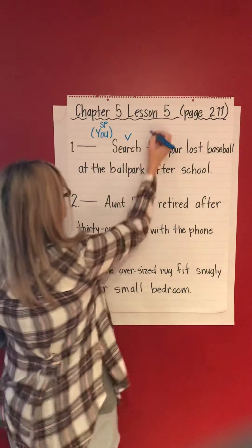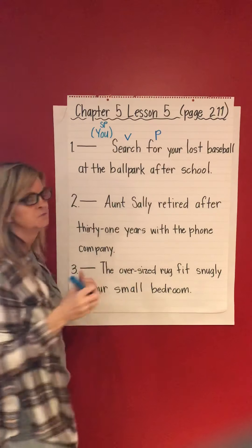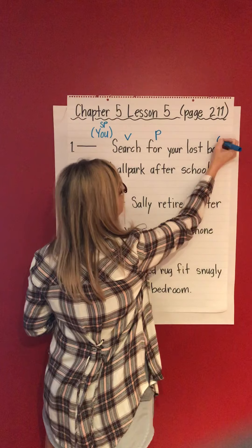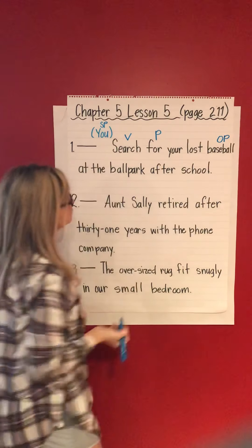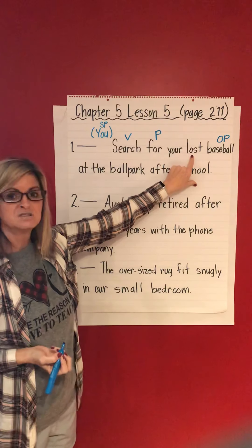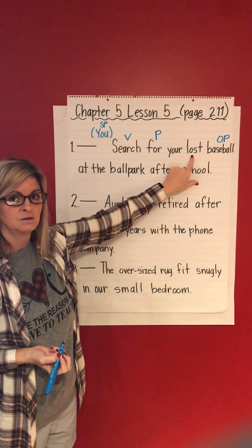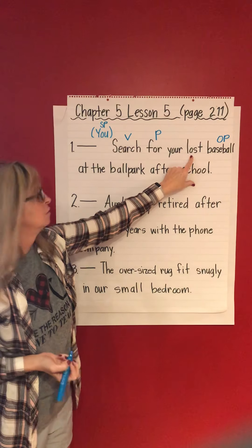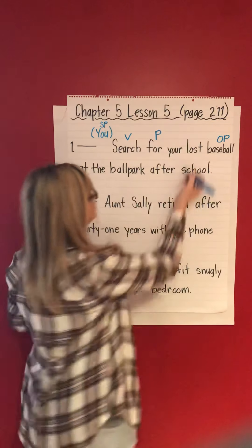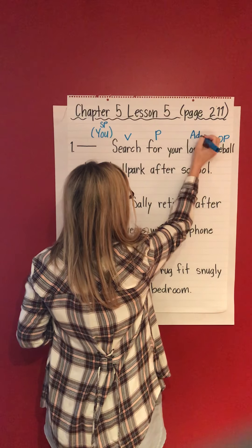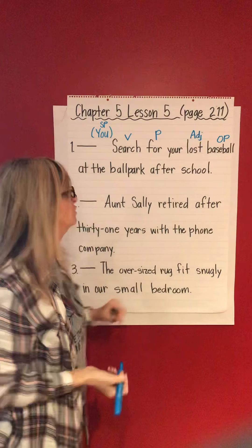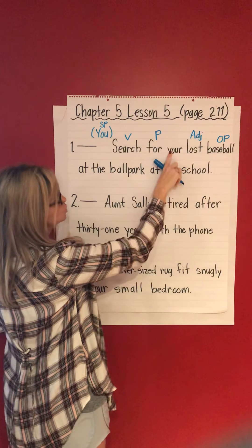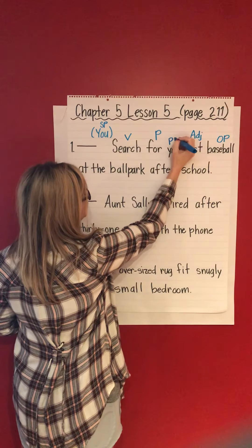'For' — preposition. For what? Baseball — object of the preposition. 'Lost' — what question does this word answer? It answers the question 'which baseball?' Lost — adjective. That's right, the lost baseball. Whose baseball? 'Your' — possessive pronoun adjective.